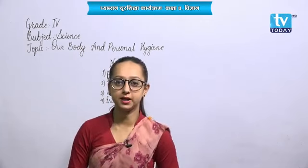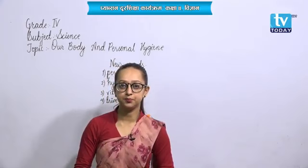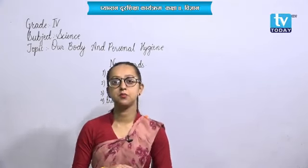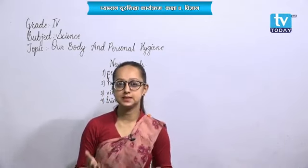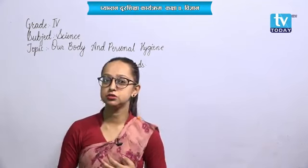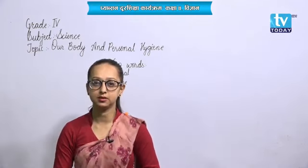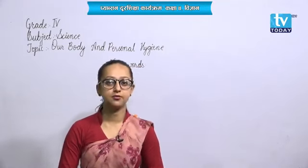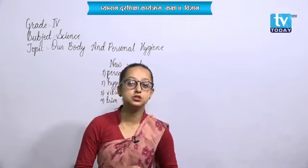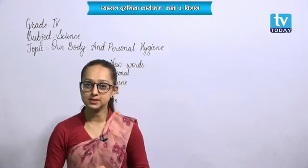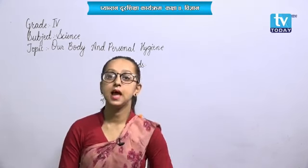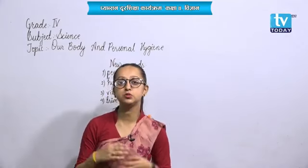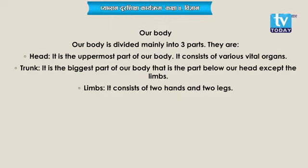Now, today we are going to learn about our body and personal hygiene. Our body is made up of many organs, many systems — organs, tissues, and cells form our body. Cells are the smallest unit of life. Group of cells forms tissues, group of tissues forms organs, group of organs forms systems, and group of systems forms a complete human body. Our body is mainly divided into three parts: head, trunk, and limbs.